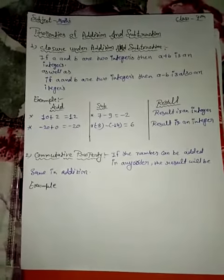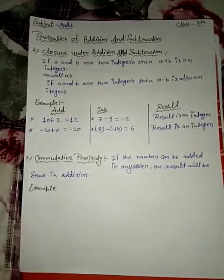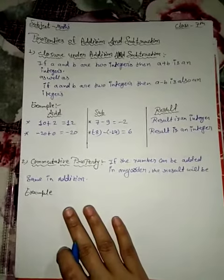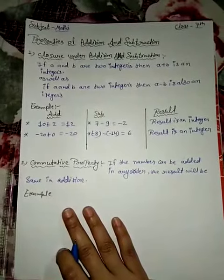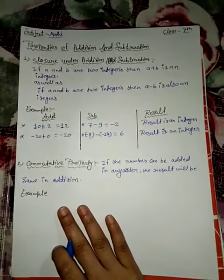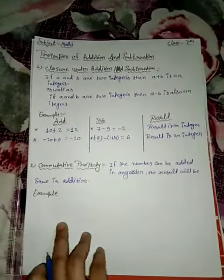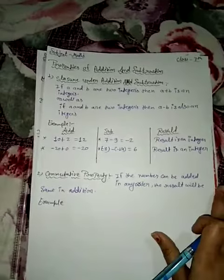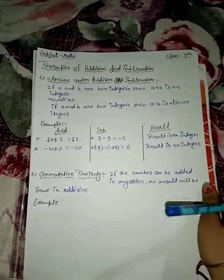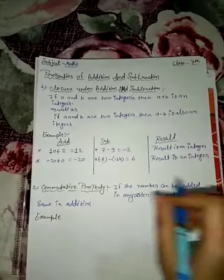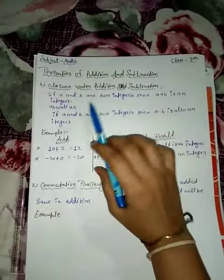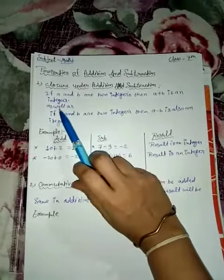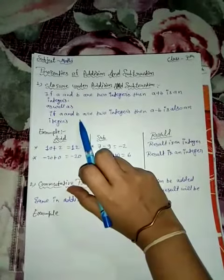Good morning everyone, welcome to your next class. Today's topic is properties of addition and subtraction. The first property is closure under addition and subtraction. If a and b are two integers, then when we add a and b the result is an integer. Similarly, if we subtract a and b, the result is also an integer.